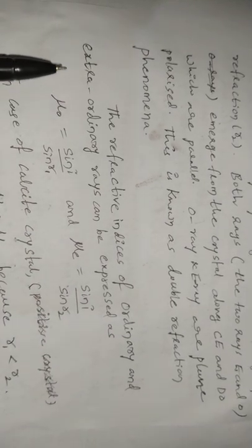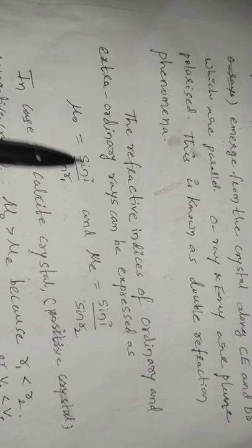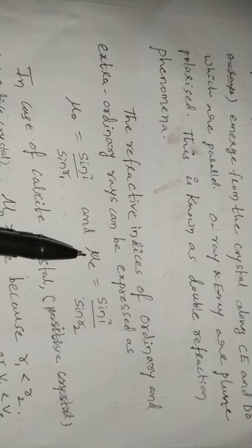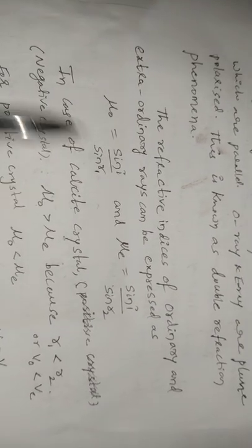According to Snell's law, the refractive index of the ordinary ray is equal to sin i divided by sin r1, and the refractive index of the extraordinary ray is equal to sin i divided by sin r2. In the case of calcite crystal, which is an example of a negative crystal, the refractive index of the ordinary ray is always greater than the refractive index of the extraordinary ray.